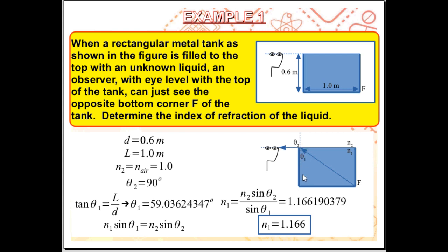The side adjacent to theta 1 is the depth d, and the side opposite theta 1 is the length l. Using SOHCAHTOA and the tangent function, we calculate the angle of incidence: tangent of theta 1 equals l over d.